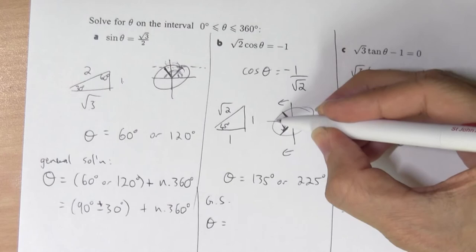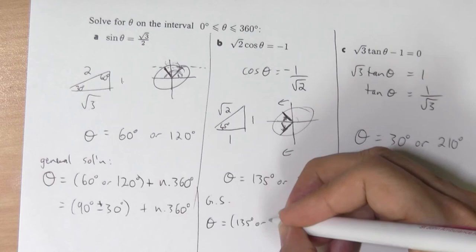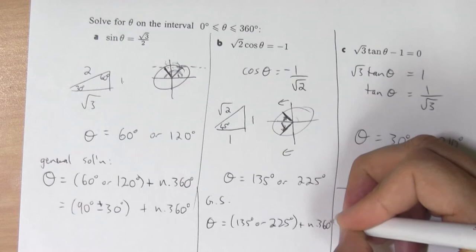My general solution here is going to be, well, how did I get here? I went 180 plus or minus the 45. But let me write the same as I did here first. 135 or 225 plus some number of 360s.